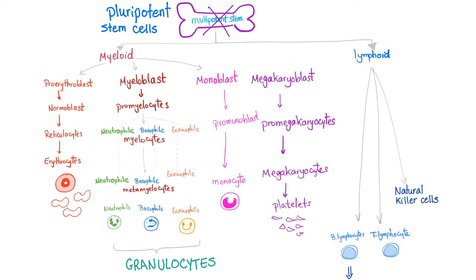Let me just clarify one thing. I've told you before that the first cell here is the multipotent stem cell — I don't think this is exactly correct. It's the pluripotent stem cell that starts everything. After the pluripotent comes the multipotent, but Guyton says pluripotent stem cell is the mother cell here, so let's go with Guyton.